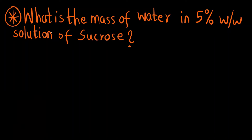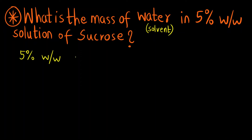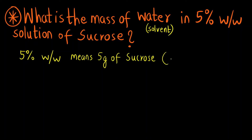The question asks: what is the mass of water in a 5% weight by weight solution of sucrose? We need to understand what 5% w/w means. It means weight of the solute divided by total mass of the solution, multiplied by 100. So 5% w/w means 5 grams of solute dissolved in 100 grams of solution.